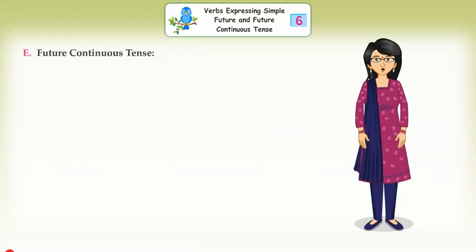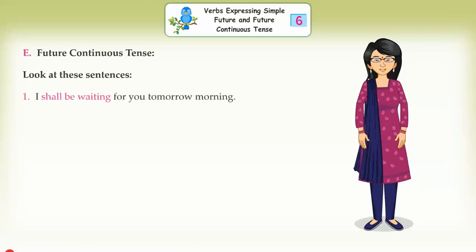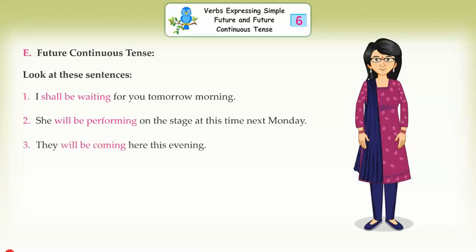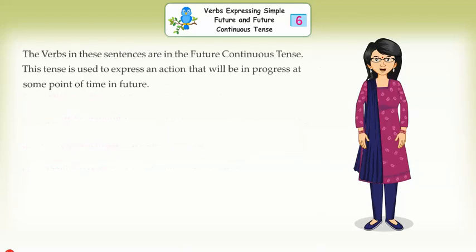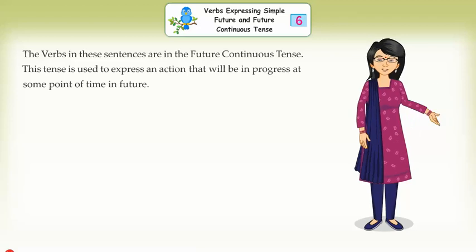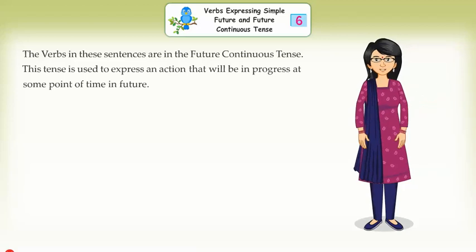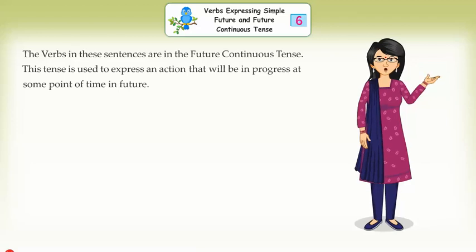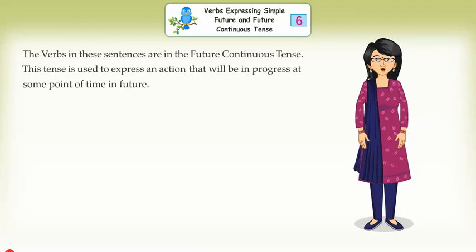Future Continuous Tense. Look at these sentences: 1. I shall be waiting for you tomorrow morning. 2. She will be performing on the stage at this time next Monday. 3. She will be coming here this evening. 4. He will be living in his new house by next year. The verbs in these sentences are in the future continuous tense. This tense is used to express an action that will be in progress at some point of time in the future.